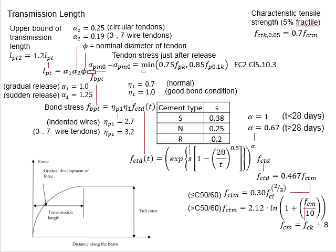F_bpt represents the bond stress between tendon and concrete. There is a factor eta_p1, which is defined by tendon type. If it is indented wire, eta_p1 equals 2.7. If it is 3 or 7-wire tendon, 3.2 is used.